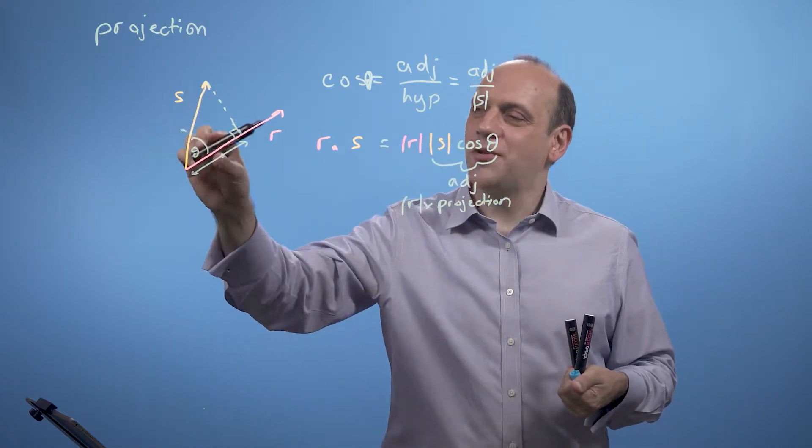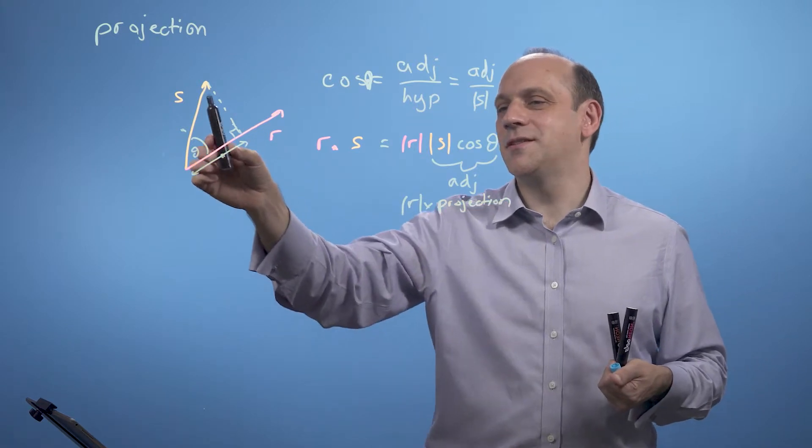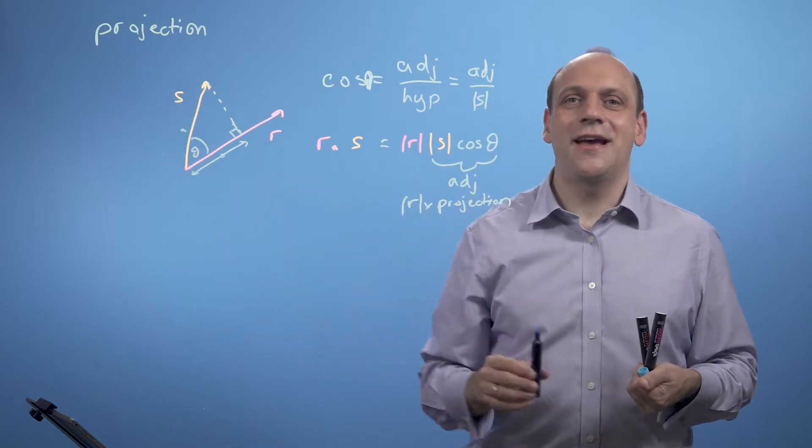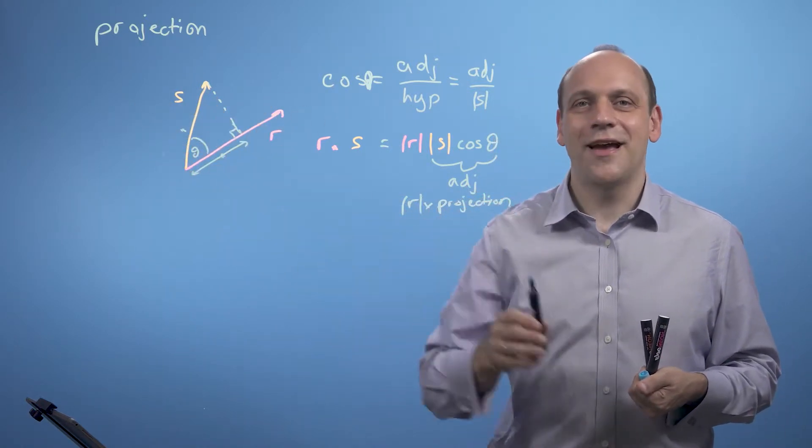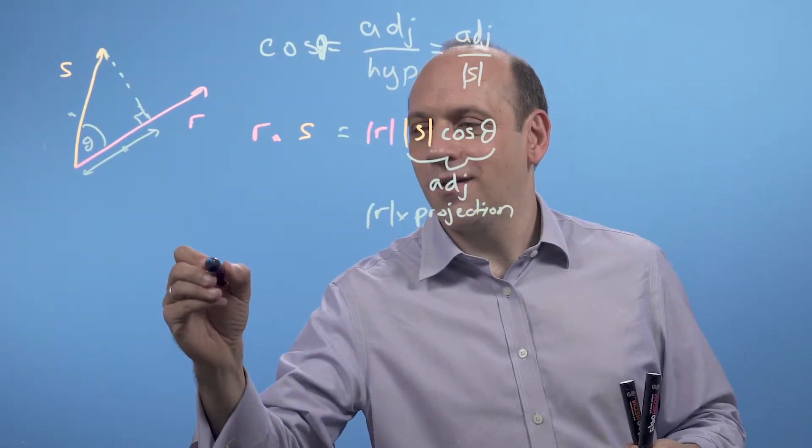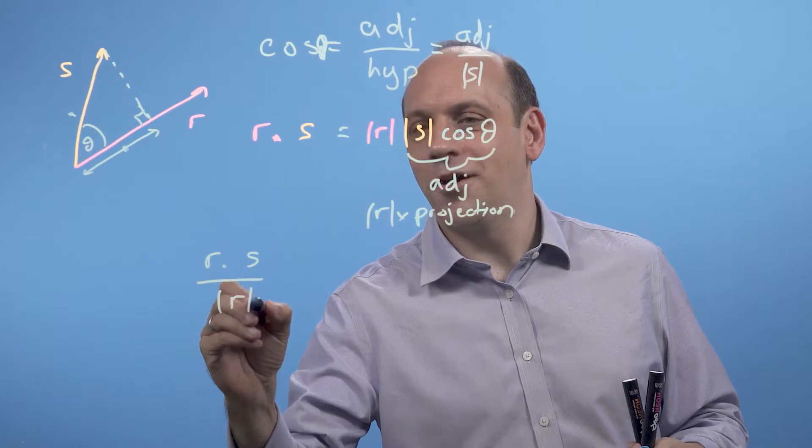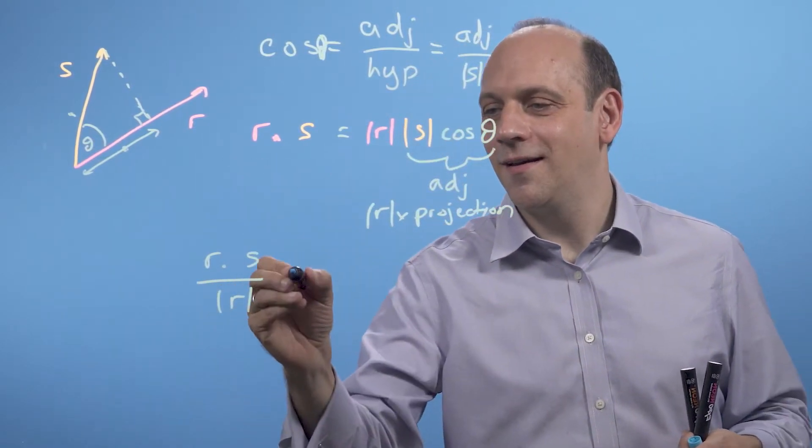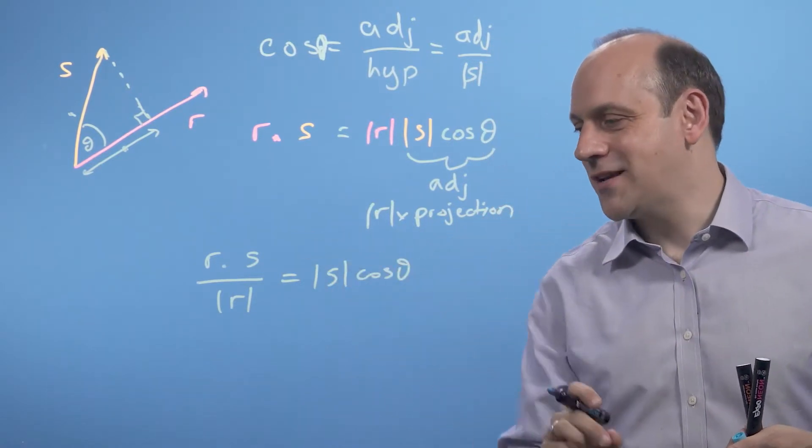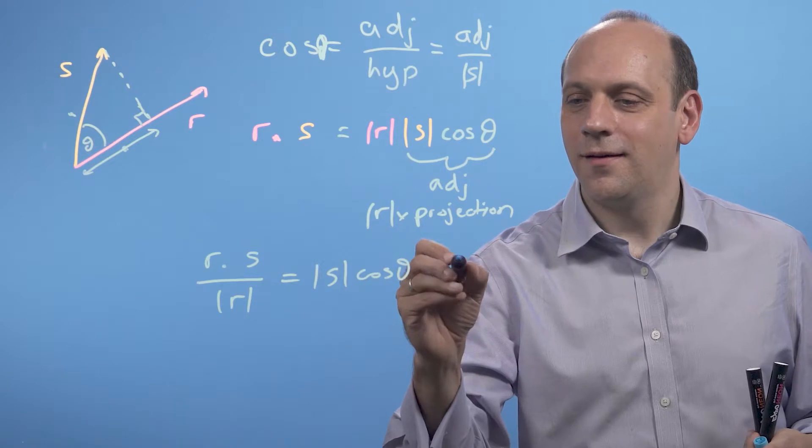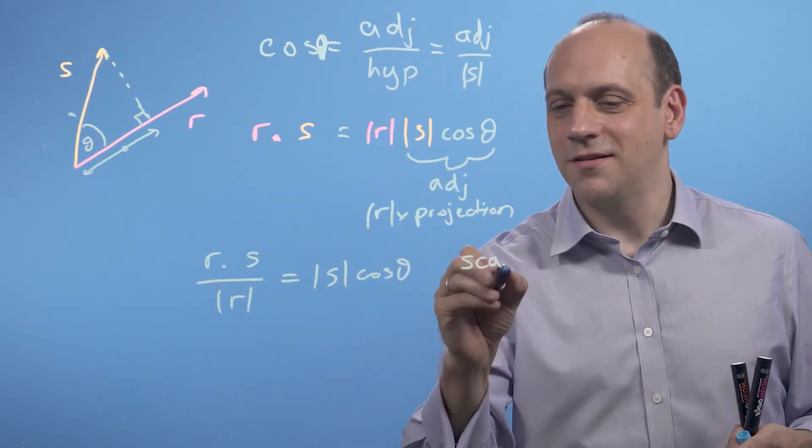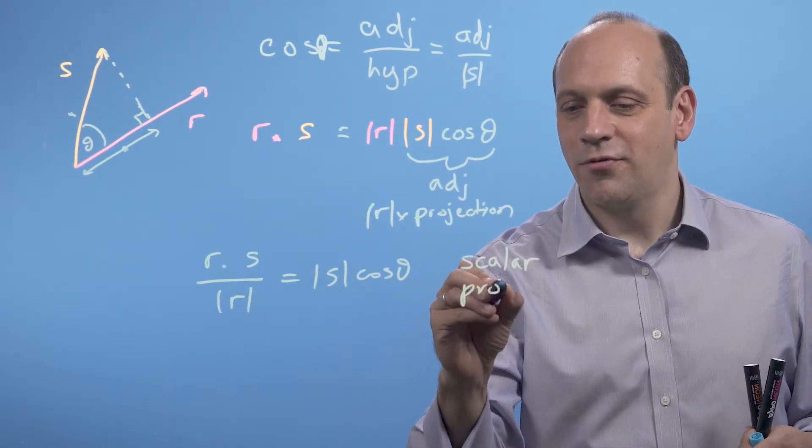So the other thing the dot product gives us is it gives us the size of r times some idea about the projection of s onto r, the shadow of s onto r. So if I divide the dot product, r dot s by the length of r, just bring the r down here, I get mod s cos theta, I get that adjacent side. I get a number, which is called, because r dot s is a number and the size of r is a number, and that's called the scalar projection.